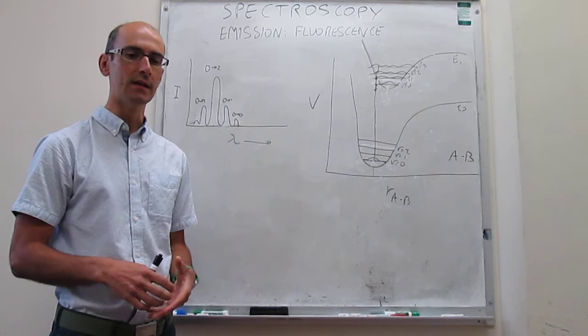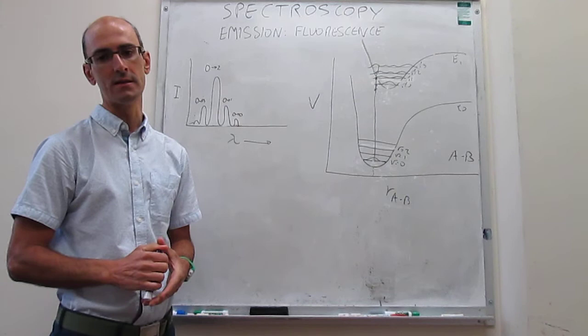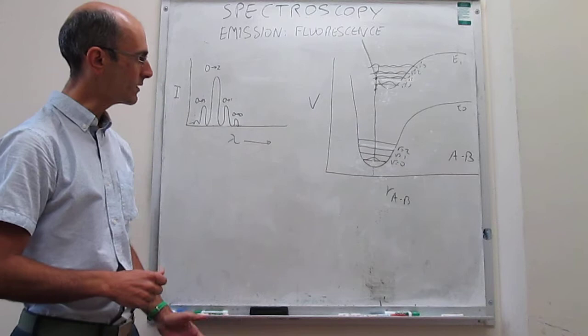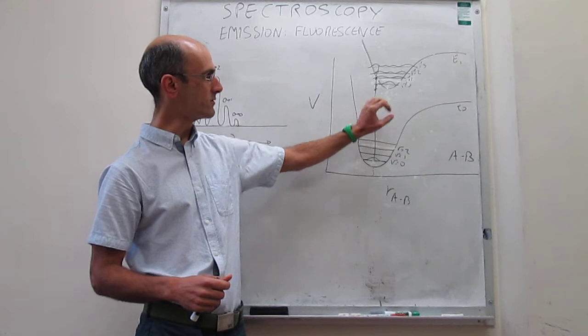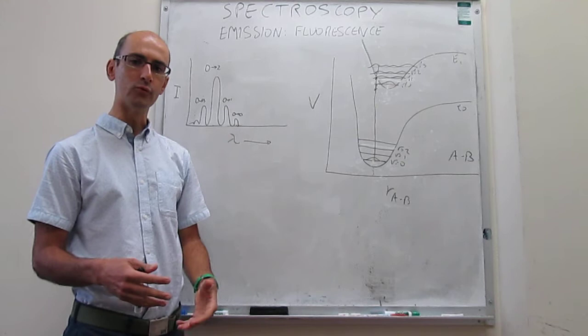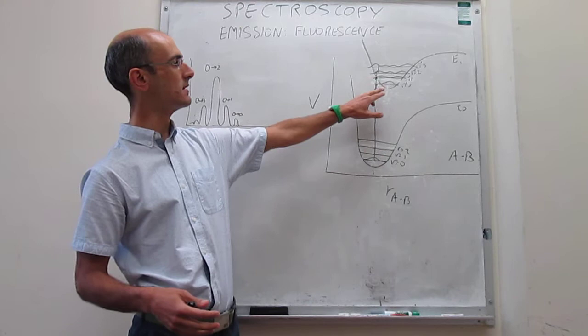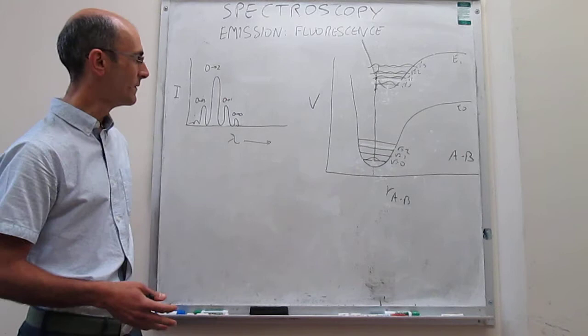What we have here is a diagram that introduces the concept of coupled electronic with vibrational excitations, where you have two electronic states with vibrational states inside those electronic states. With the Franck-Condon Principle, we have studied what controls the intensity of the transition from a particular vibrational state in the ground electronic state to a particular vibrational state in the excited electronic state. This is where we start.